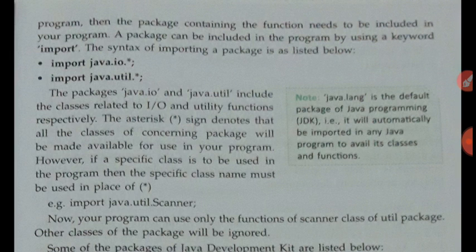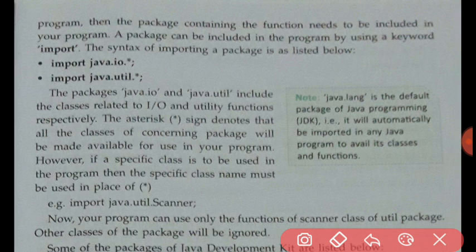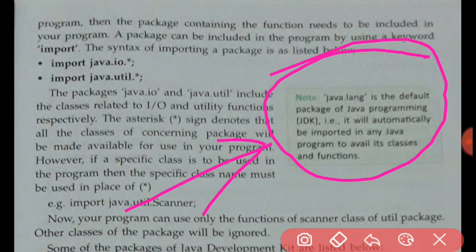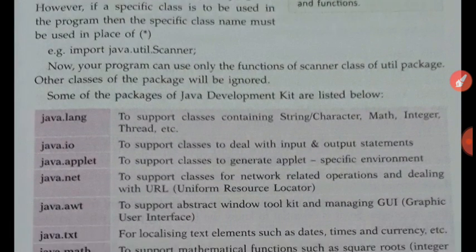If we use the import keyword, we can include the package in our program and use whatever information is there. We use existing information so we do not need to write it again. By default, there is a package called 'java.lang' — lang for language — which is always included in your program. Whenever you start a program, you do not need to include this package explicitly because it is always included.